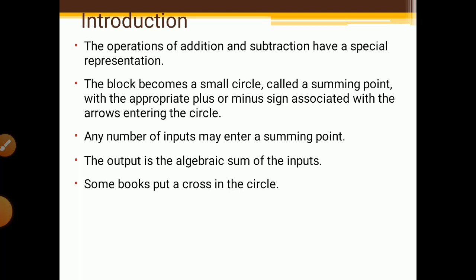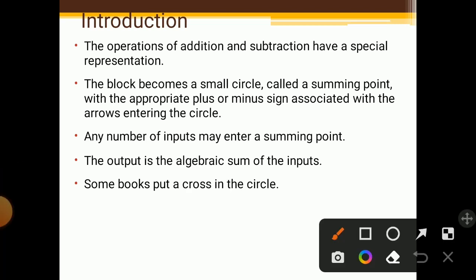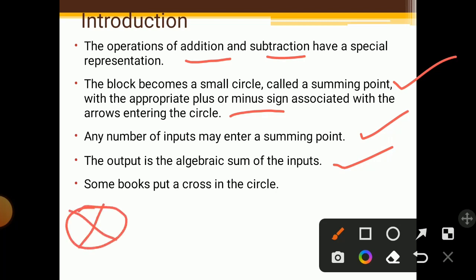The operations of addition and subtraction have a special representation. For solving complicated blocks, we require some reduction principles, so we go for addition and subtraction of blocks. The block becomes a small circle called a summing point, which adds or subtracts inputs. The summing point has either a plus or minus sign associated with the arrows entering the circle. Some books put a cross inside the circle.